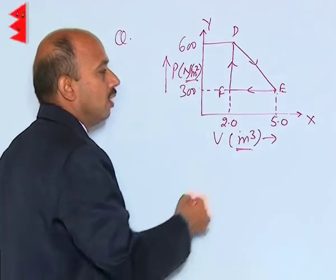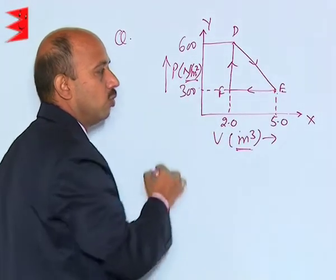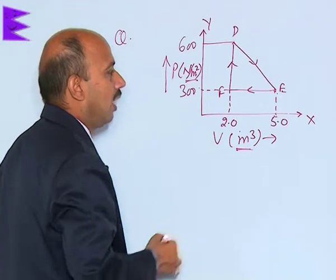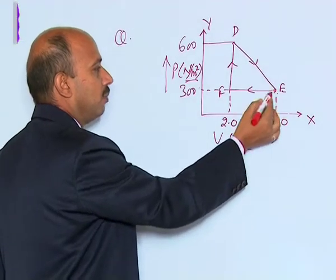At E, see here the pressure remains constant - that is an isobaric process - and the volume is reduced from 5 to 2.